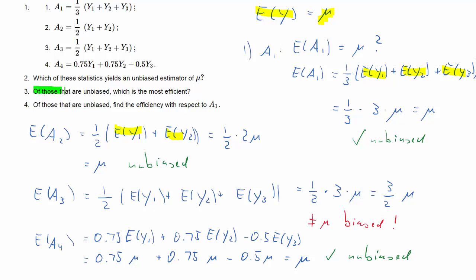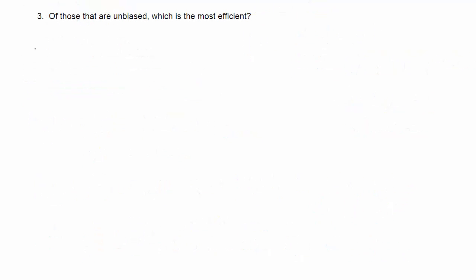So the question is now, of those estimators that are unbiased, which one is the most efficient? That means we are looking at the variances of these estimators. And we want the one with the smallest variance.